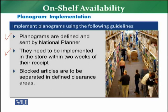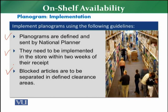The third implementation guideline is that blocked articles must be separated and placed in defined clearance areas. If articles are blocked for sale or ordering but are still physically available in the store, they should not remain on the main planogram shelf. By moving them to the clearance area, the store can liquidate those articles. Normally, only active articles — those available for the customer to buy — should appear on the main planogram.